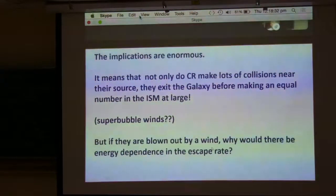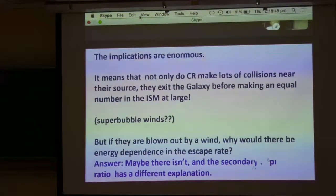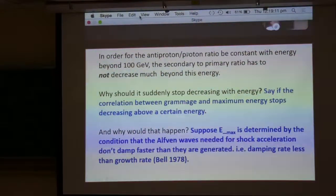To me, this is direct evidence for superbubble winds or something very similar, because you have to blow the cosmic rays out mostly before they even mix with the galaxy at large. Now, if they're blown out by a wind, why would there be energy dependence in the escape rate? The answer to that question is, maybe there is no energy dependence in the escape rate. Maybe the secondary to primary ratio has a different explanation, namely the one that I just gave. In order for the antiproton to proton ratio to be constant with energy beyond 100 GeV, the secondary to primary ratio has to not decrease well beyond this energy, and that's another prediction of the model, that the boron to carbon ratio will flatten out as you go through energies not yet achieved in the boron observations.